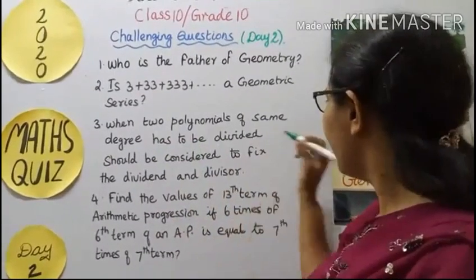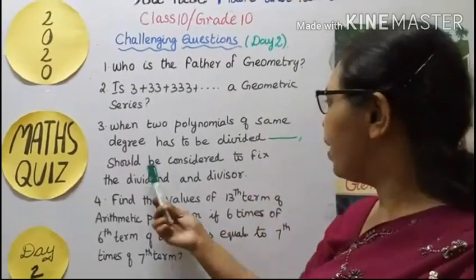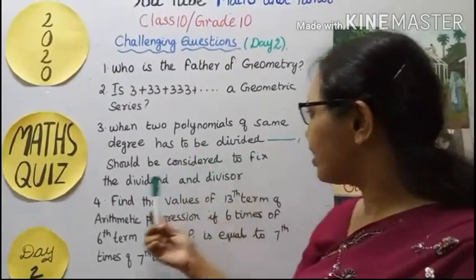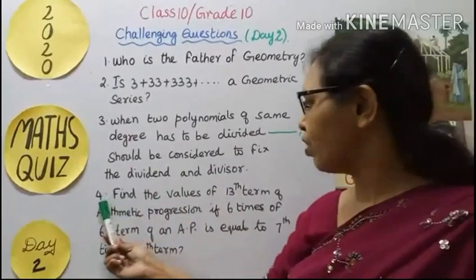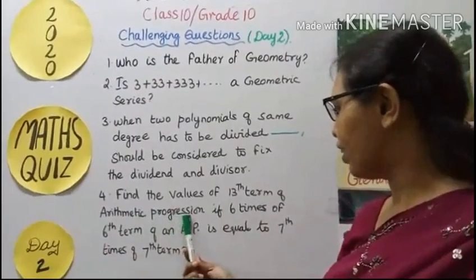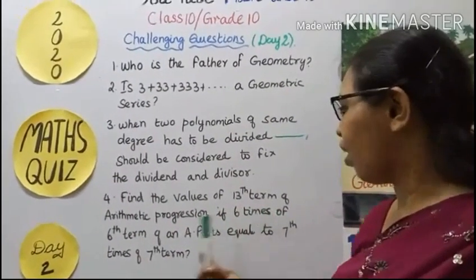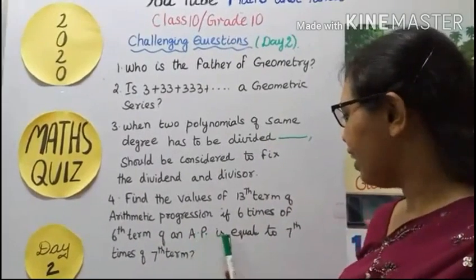Fourth question: Find the value of the 13th term of an arithmetic progression if 6 times the 6th term of an AP, this arithmetic progression, is equal to 7 times the 7th term.